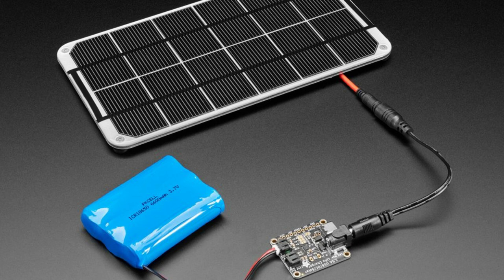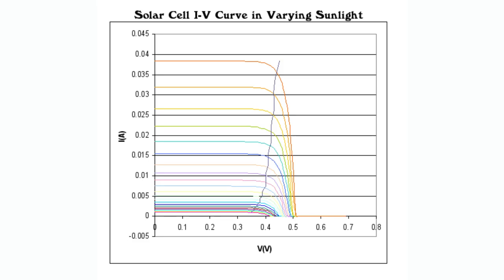And this boost converter, the MAX20361, is a specific type of boost converter that is designed for use with very small solar panels to charge up a small LiPo battery or a super capacitor.